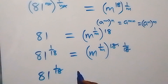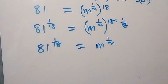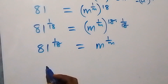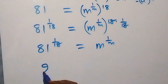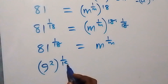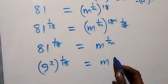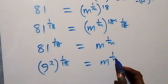We are left with 81 raised to power one over 18, equals m raised to power one over m. Now, 81 can be written as 9 squared, so we have 9 squared raised to power one over 18, equals m raised to power one over m.